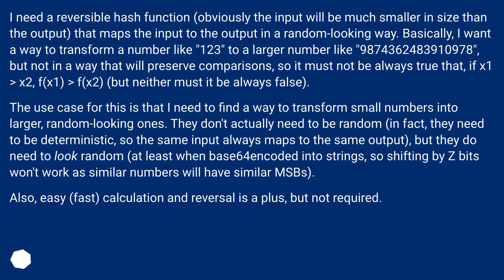I need a reversible hash function. Obviously the input will be much smaller in size than the output, that matches the input to the output in a random-looking way. Basically, I want a way to transform a number like 123 to a larger number like 9,874,362,483,910,978, but not in a way that will preserve comparisons. So it must not be always true that if x1 > x2, then f(x1) > f(x2), but neither must it be always false. The use case is that I need to find a way to transform small numbers into larger, random-looking ones.